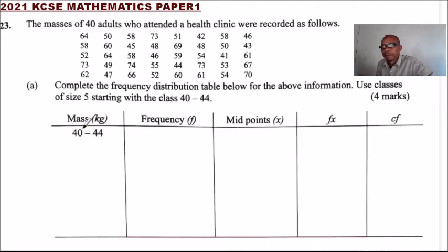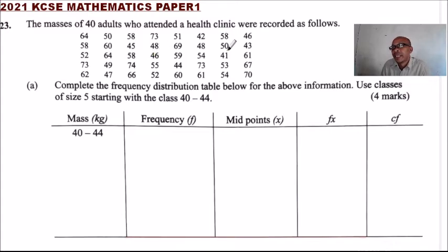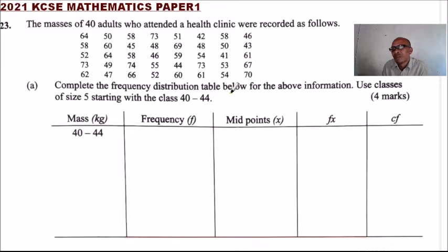Question number 23: the mass of 40 adults who attended a health clinic were recorded. We have been given the data from 64, 50, 58 up to the last one which is 70. Part A: complete the frequency distribution table below for the above information, using classes of five starting with the class 40 to 44.